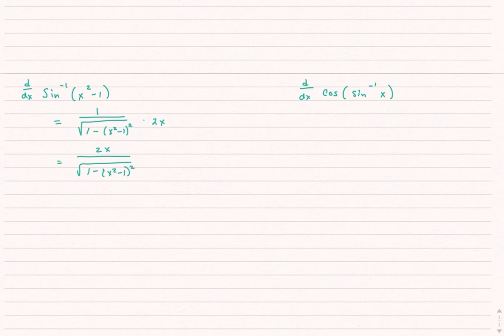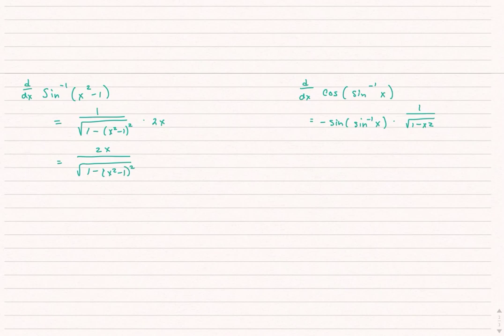For the second example, the outside function is cosine. The derivative of cosine is negative sine, applied to whatever is inside, and then I do the chain rule — taking the derivative of the inside of the cosine, which is 1 minus the square root of 1 minus x squared. There is one simplification I do expect: if I take sine of inverse sine of something, that gives me back whatever I started with — sine and inverse sine undo each other. So I expect you to recognize that sine of inverse sine of x is just equal to x.